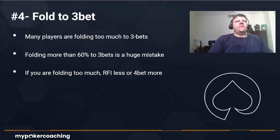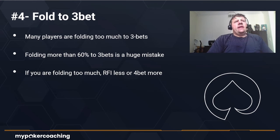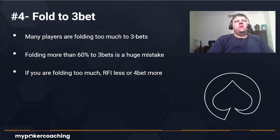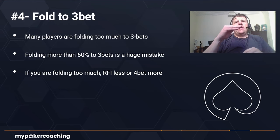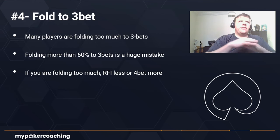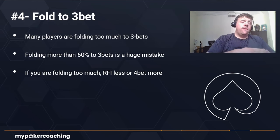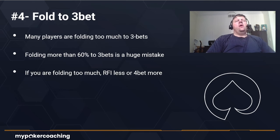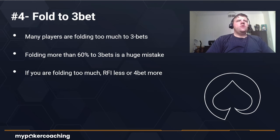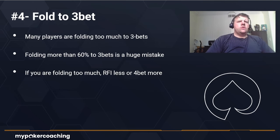Stat number four is Fold to Three-Bet — very important. Many players fold too much to three-bets. If you see someone folding more than 60 percent of the time to three-bets, it's likely a huge mistake and you can print money by three-betting them very often. Fold to three-bet is highly correlated to their RFI: a very high RFI player is likely to fold more to three-bets because their ranges are wider. A tight RFI player will have a low fold to three-bet and show up with stronger hands. If you're folding too much to three-bets yourself, the two fixes are to raise first in less, or four-bet more often.